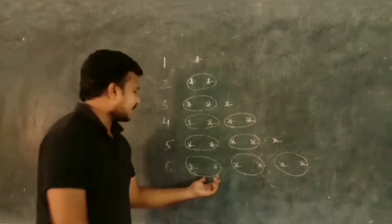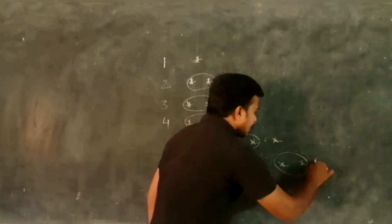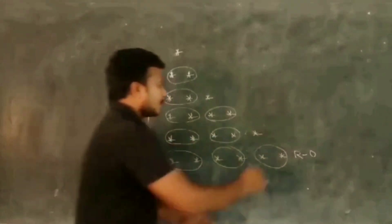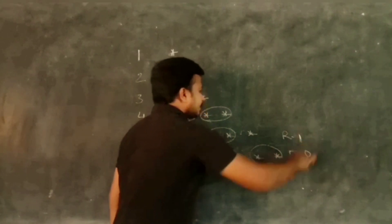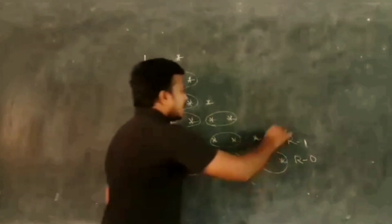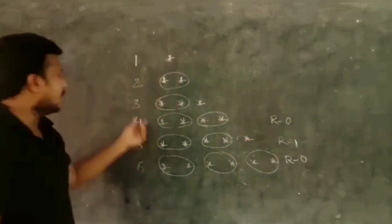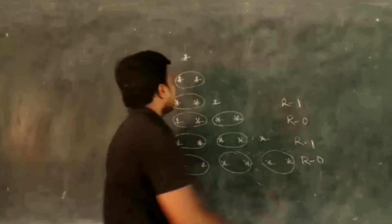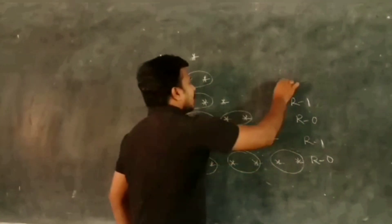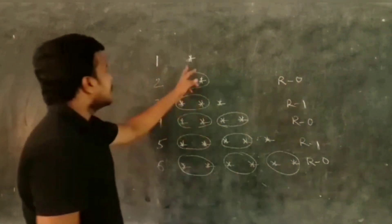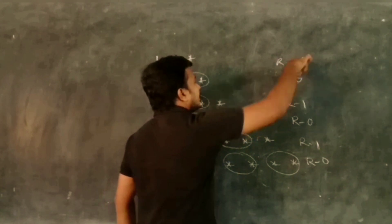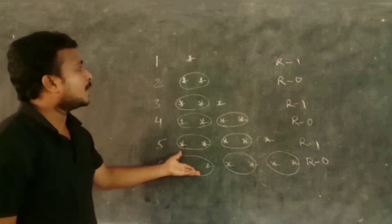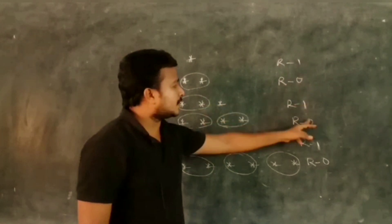Making successive pairs: 6 has pairs with remainder 0. 5 has 2 pairs, remainder 1. 4 has 2 pairs, remainder 0. 3 has 2 pairs, remainder 1. 2 has 1 pair, remainder 0. 1 is a single number, remainder 1. So making them pairs we get remainders: 1, 0, 1, 0, 1, 0.